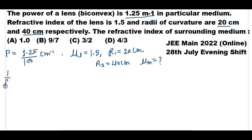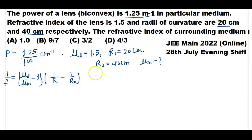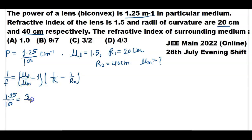By the lens maker's formula, we know that 1/f equals (refractive index of lens / refractive index of medium minus 1) multiplied by (1/R1 minus 1/R2). We will put the values of R1 and R2. Power equals 1/f, and the power value given is 1.25/100. Refractive index of lens is 3/2, and R1 is 20 cm.